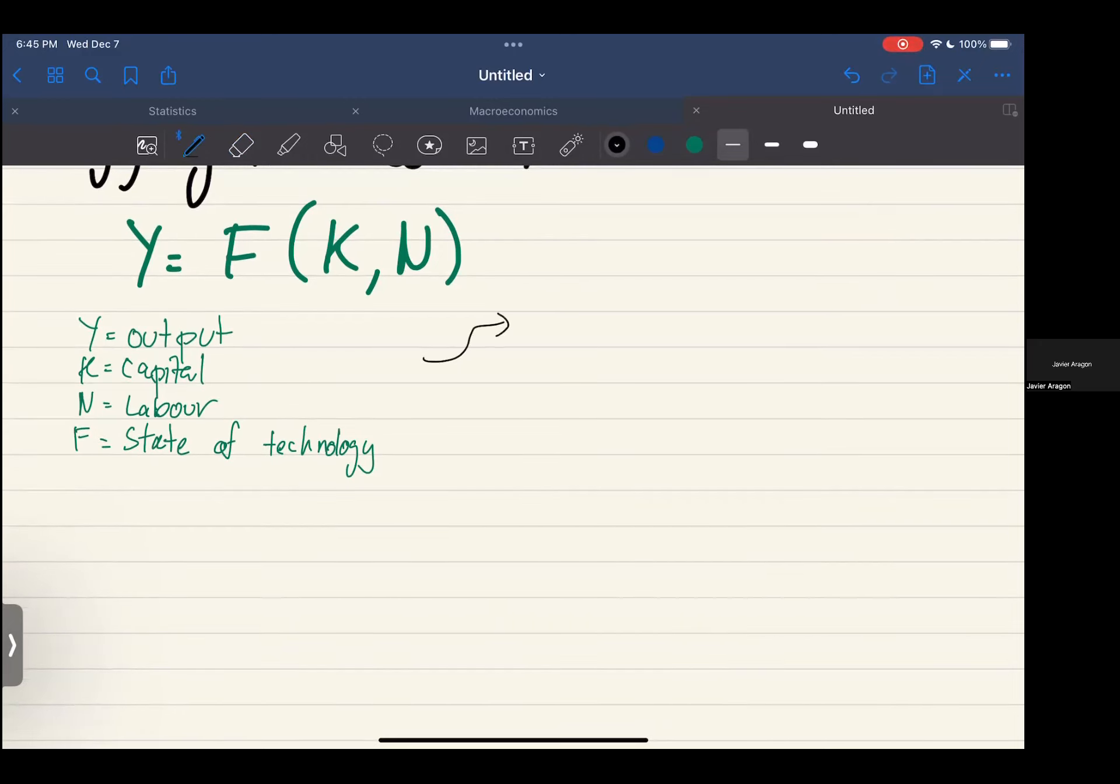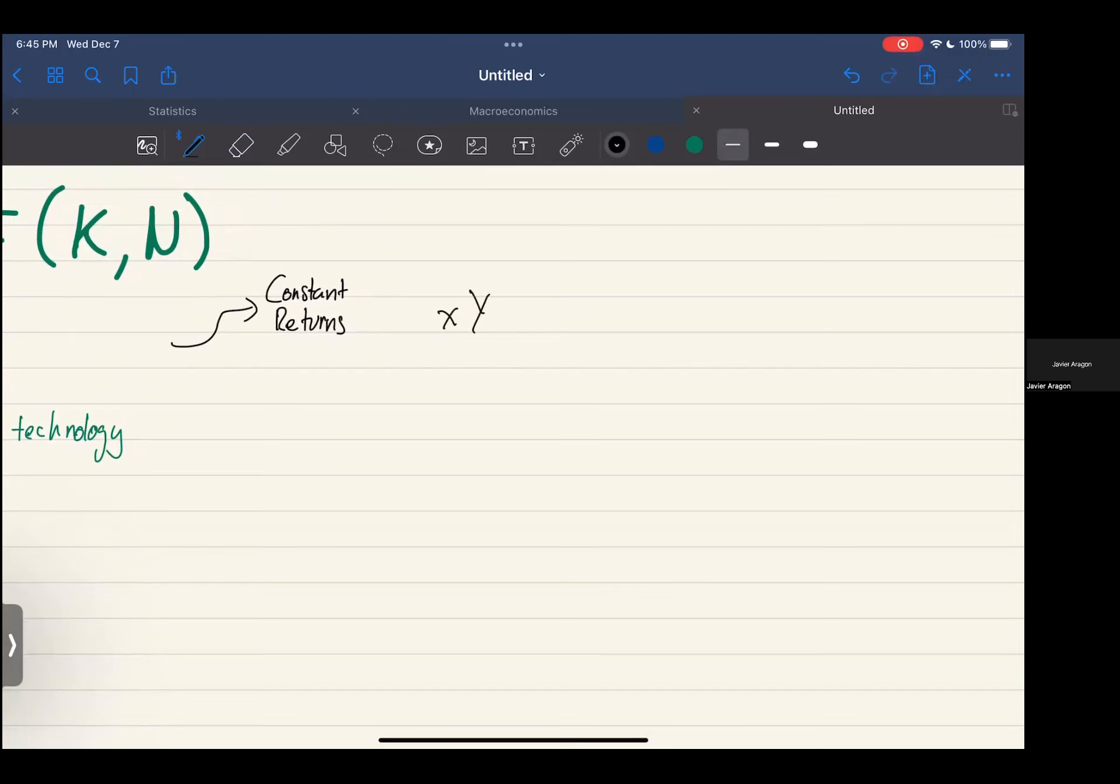You can see this two different ways, sorry three different ways. You have constant returns to scale. The formula for constant returns to scale is X times Y equals F of X times K and X times N. If you remember in math last year with Mirko we mostly looked at this as lambda. What you're saying is that for every increase in lambda, your output Y is going to increase by the same amount. That's what constant returns to scale means.